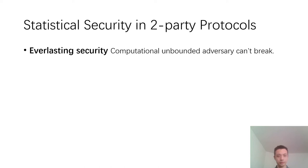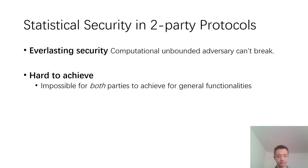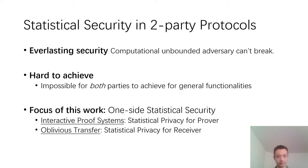In this work, we study statistical security in two-party protocols. Statistical security can provide everlasting security such that even a computationally unbounded adversary cannot break the scheme. However, such security is hard to achieve — for example, it is impossible for both parties to achieve statistical security for general functionalities. So the focus of this work is on one-sided statistical security.